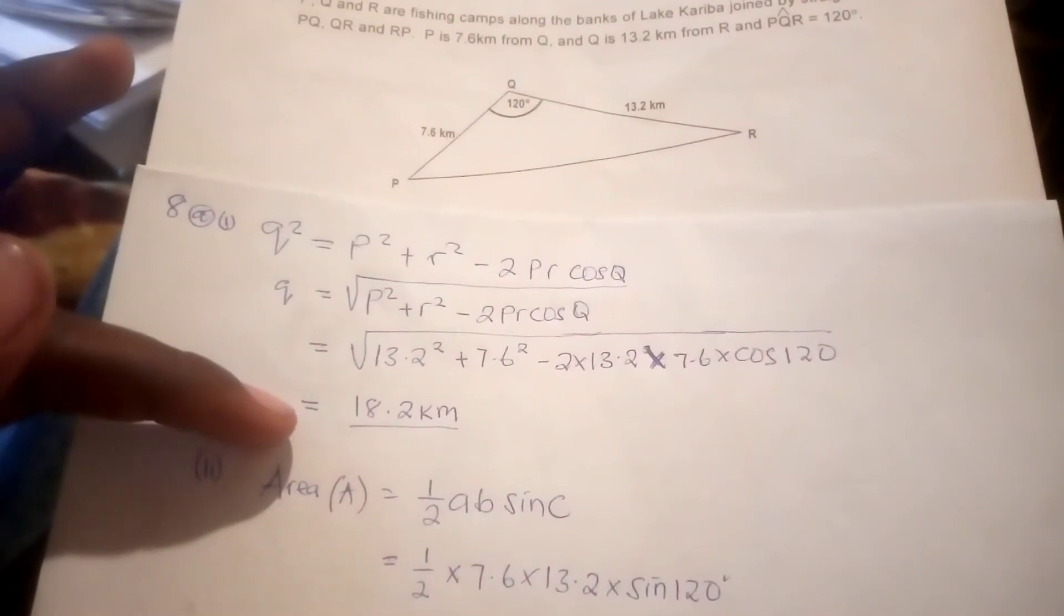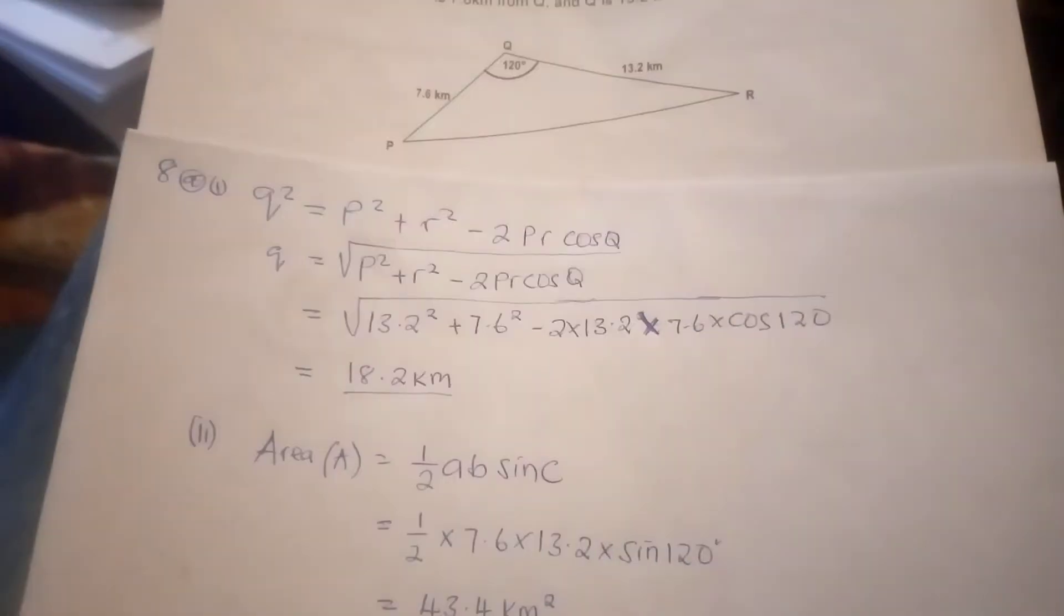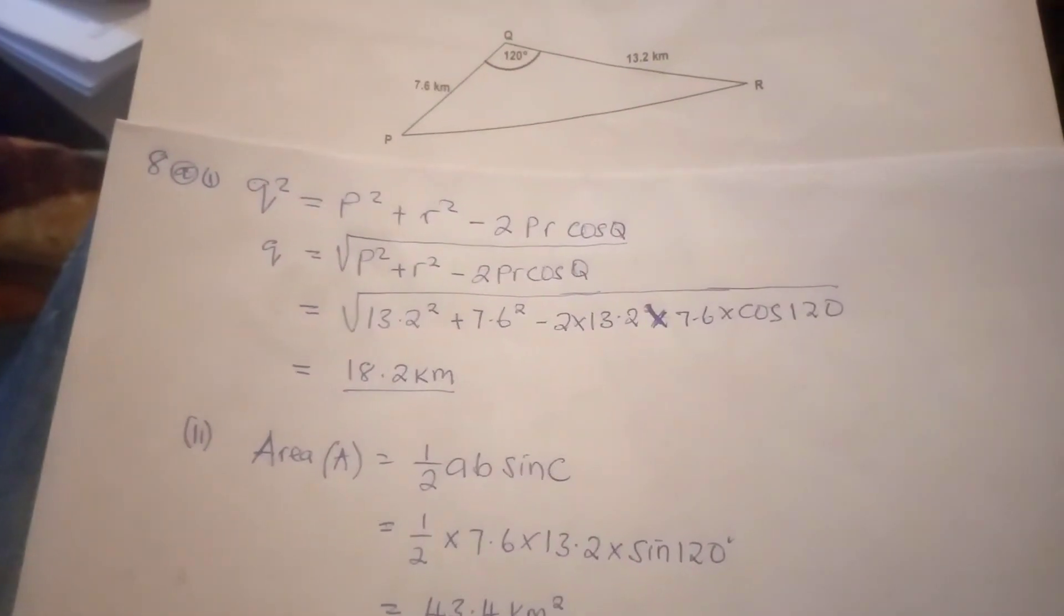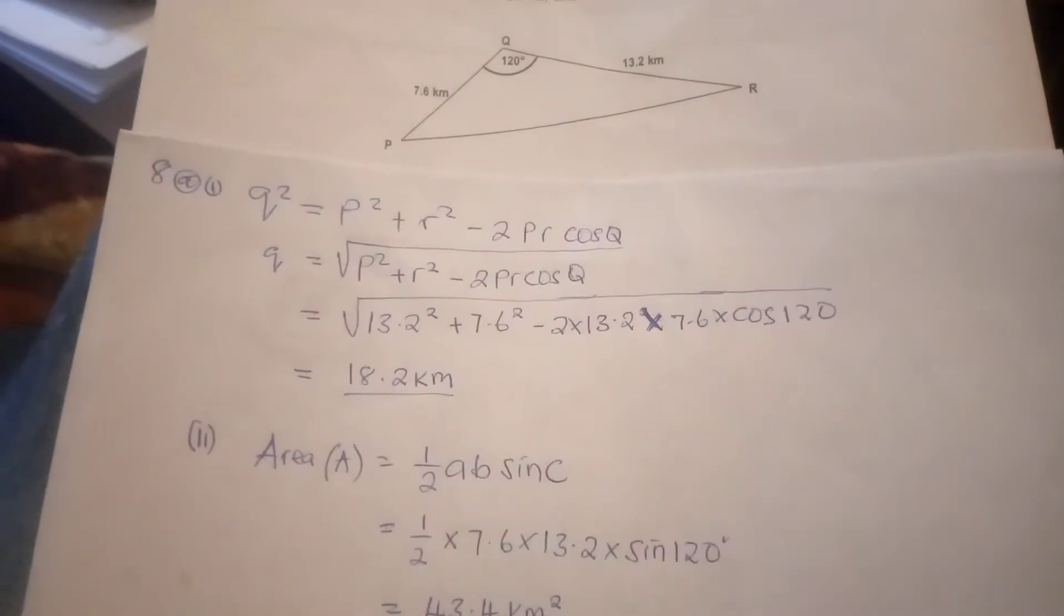Which is equal to 18.2 kilometers. So the distance PR is equal to 18.2 kilometers.